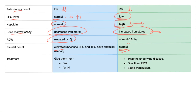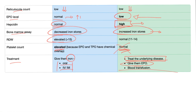Treatment of iron deficiency anemia: if the patient has no iron, give iron orally, intravenously, or intramuscularly. For anemia of chronic disease, try to treat the underlying disease such as rheumatoid arthritis. It could also be due to low erythropoietin, in which case you give the patient erythropoietin. A last resort is blood transfusion.